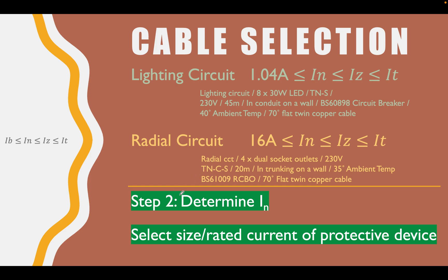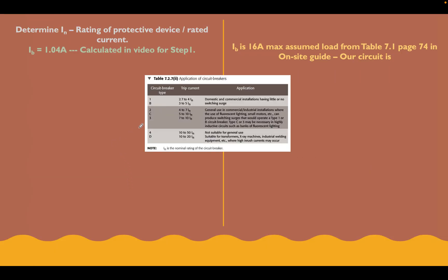Let's go to step 2. Determine IN, select the size or current rating of our protective device. We've got this table in the middle, we'll go through this afterwards. Let's just look at these two circuits and select our devices. We know to start with that this is always true - this is part of our formula we just looked at and we just spoke about. The rating of our protective device, our IN, has to be greater or equal to our design current.